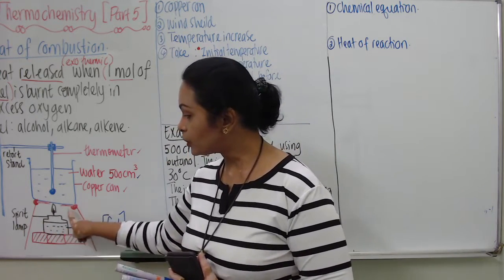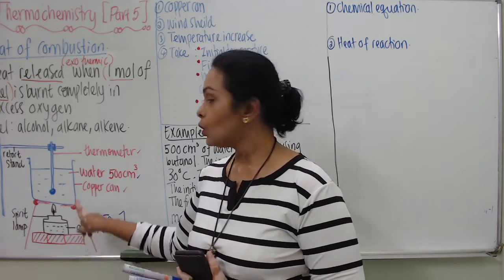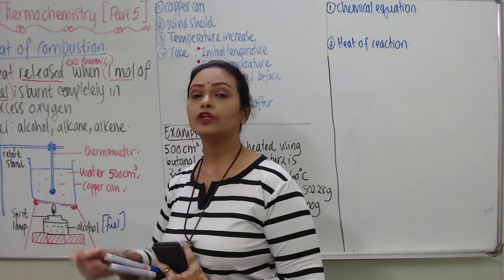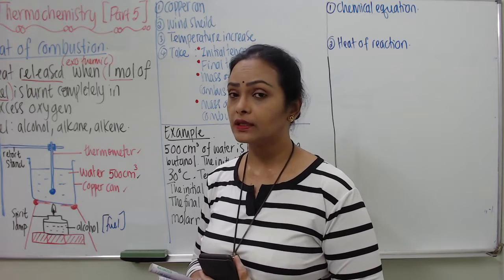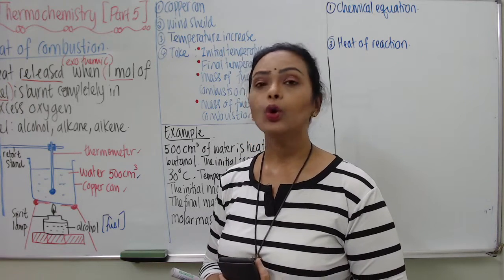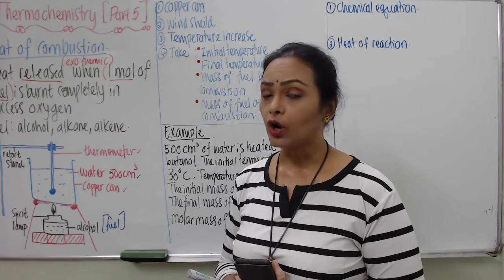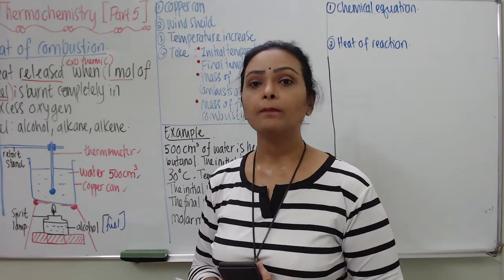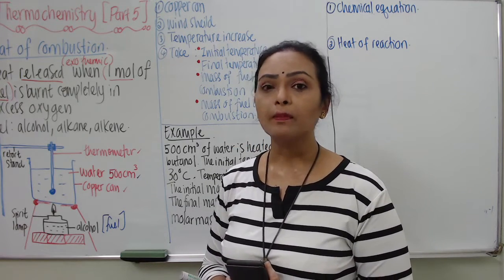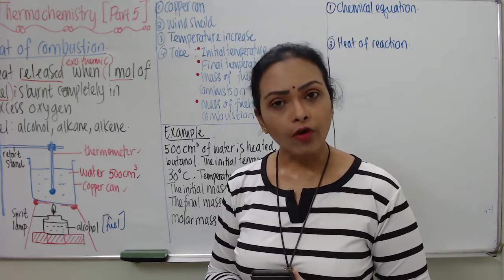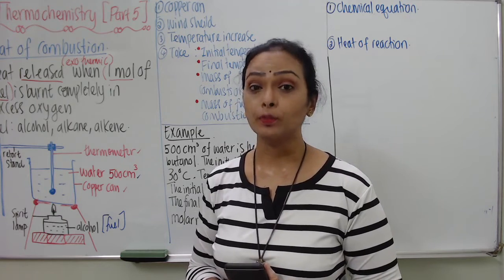We must have a thermometer immersed in the water inside a copper can. Copper can is used because copper is one of the best conductors of heat, meaning heat will be directly transferred. Whatever heat is produced by the burning fuel — for example, alcohol — will be directly transferred to the copper can. In order to determine heat of combustion, we must try to reduce the number of apparatus used, because apparatus might absorb heat from the fuel.